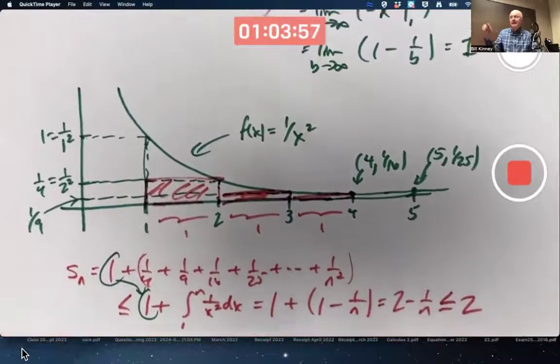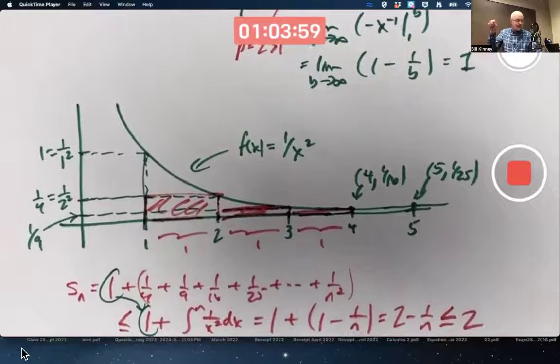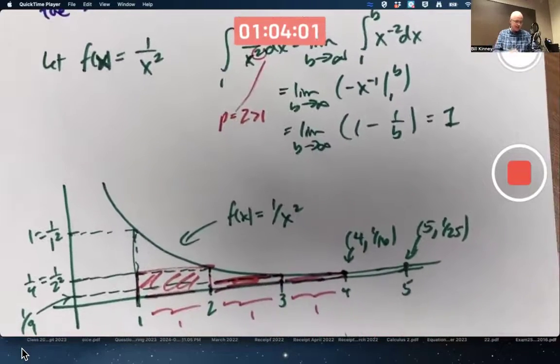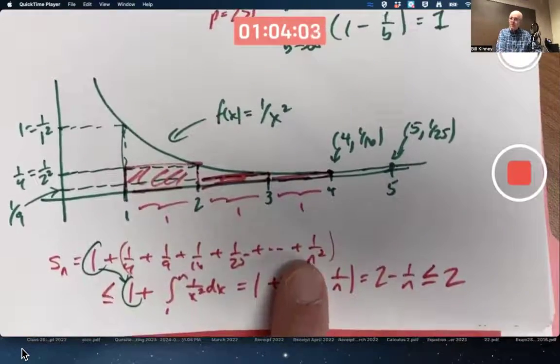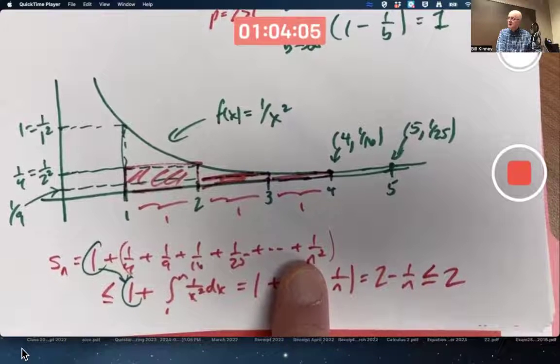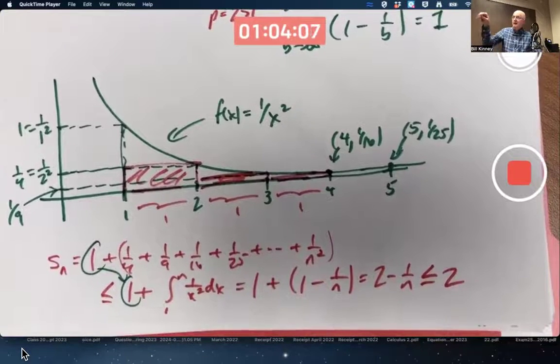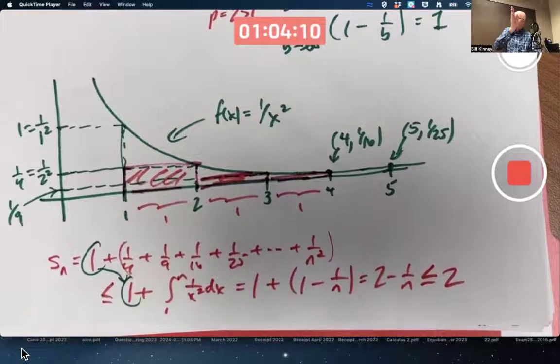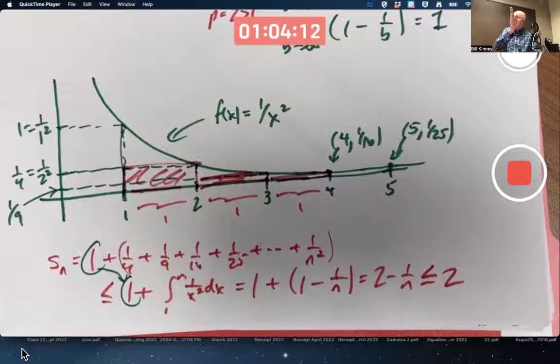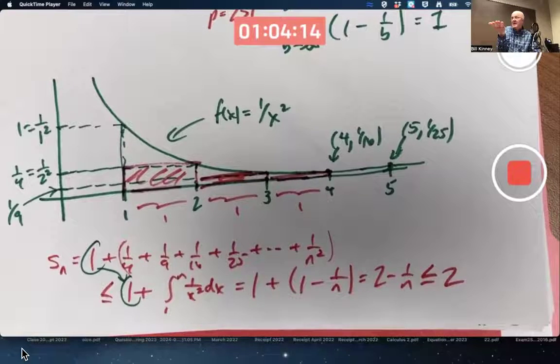So Sn's always less than or equal to 2. These Sn's keep getting bigger as n gets bigger because I keep adding more and more terms. They keep getting bigger. They move to the right on the number line, but they never get past 2. They have to converge to something less than 2.